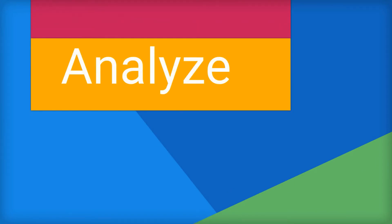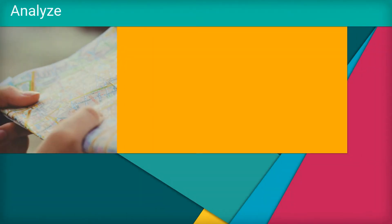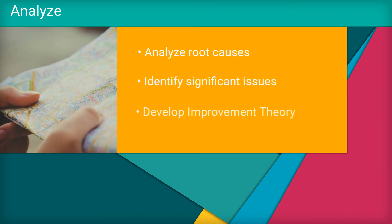The third DMAIC step is Analyze. The Analyze phase examines possible causes for poor performance and identifies the most likely significant issue that must be addressed to improve the system.